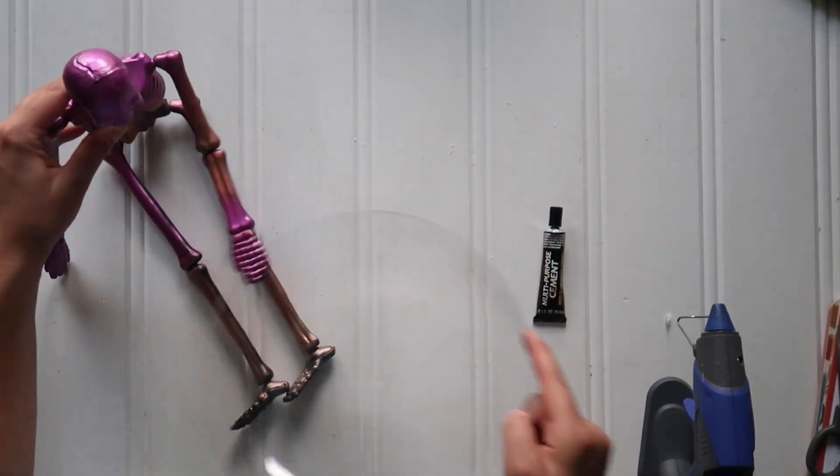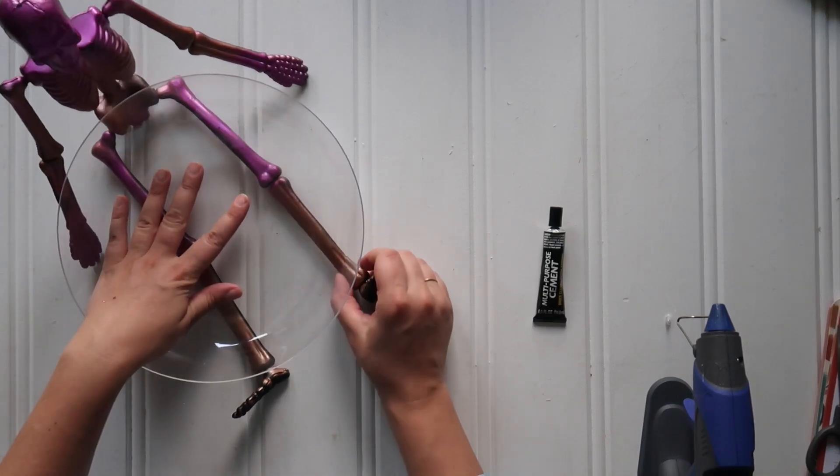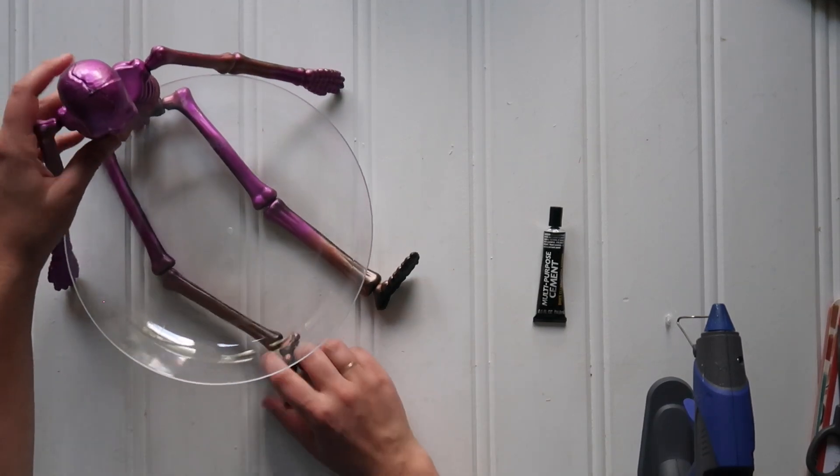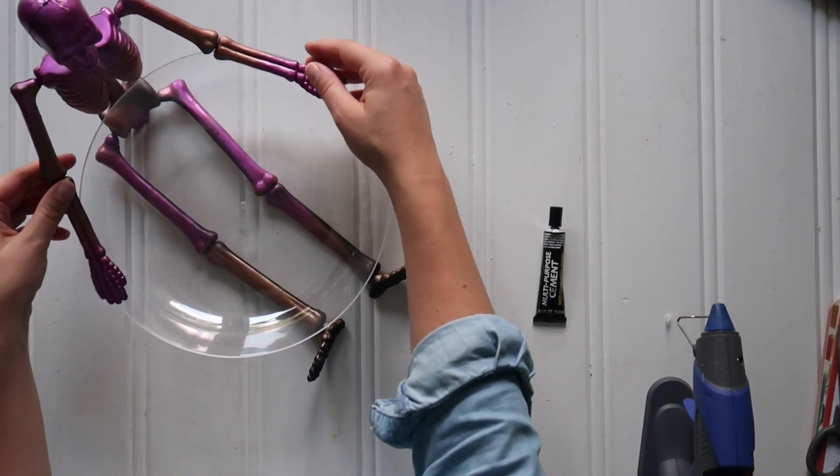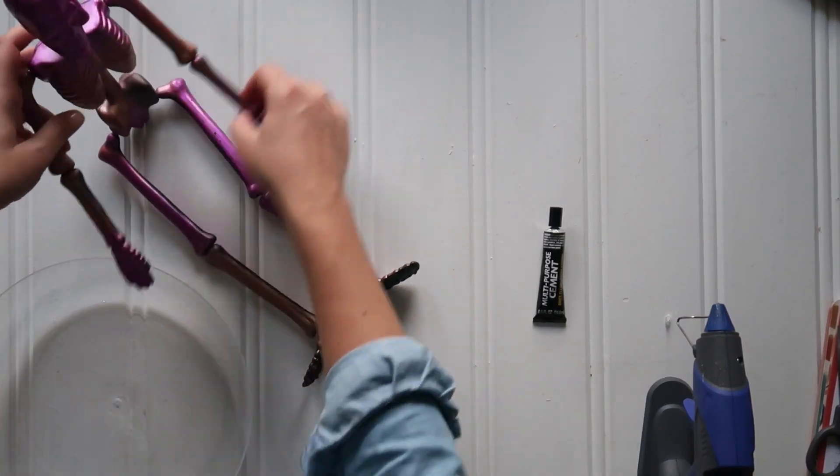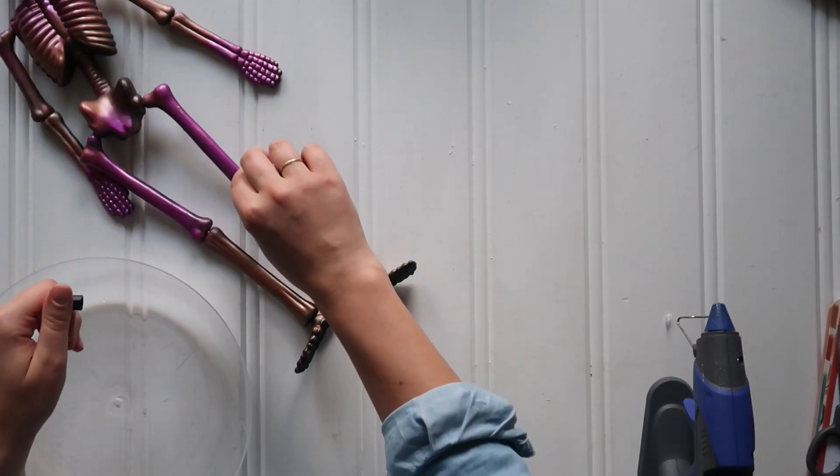Then you want to glue everything together. So we're gonna use my favorite combination of E6000 and hot glue. E6000 gives you the long-term hold that you want to make this permanent. Hot glue works instantly so everything kind of holds together and you don't have to hold it in place while it dries.